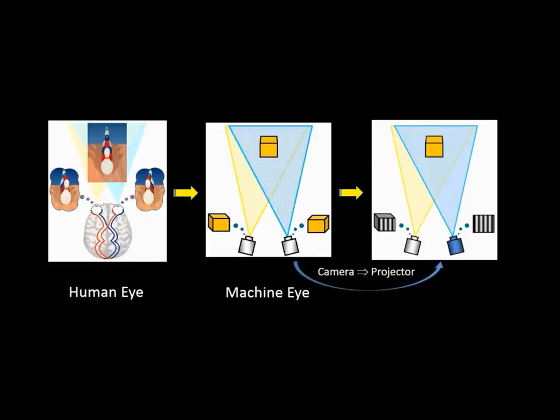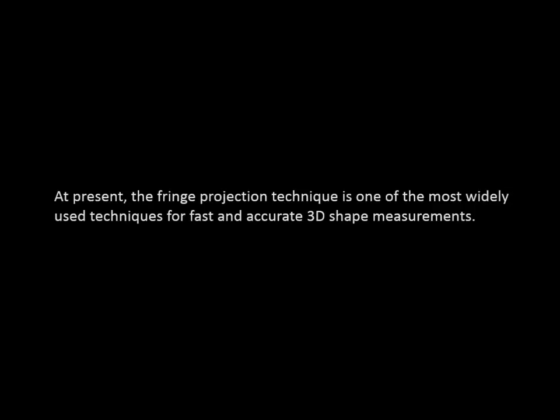By replacing one of the cameras with a projector, the system becomes a fringe projection system for 3D shape and deformation measurement. At present, the fringe projection technique is one of the most widely used techniques for fast and accurate 3D shape measurements.